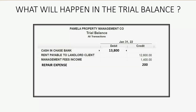After step two, repair expense will disappear and become zero because now the tenant and landlord are responsible, not the management company. Because we're going to deduct it from the rent payable to the landlord, that account will decrease by the amount we're withholding as an expense. The numbers will show rent payable at twelve thousand four hundred.